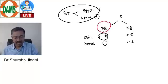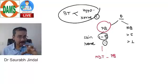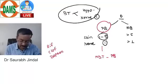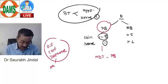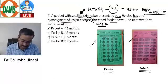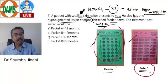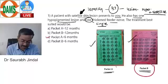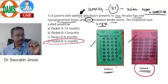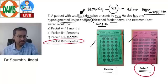For paucibacillary leprosy, we give multi-drug therapy. Earlier there was a green packet and a red packet, but now it's only a red packet containing rifampicin, clofazimine, and dapsone. For PB, treatment is given for six months; for MB, it's 12 months. So the answer is MDT red packet for six months — paucibacillary Hansen's disease.